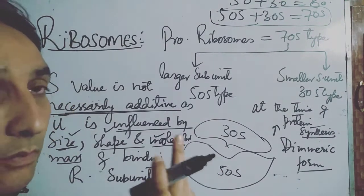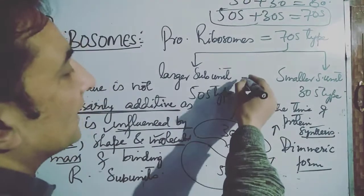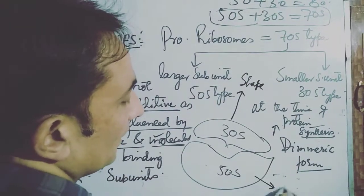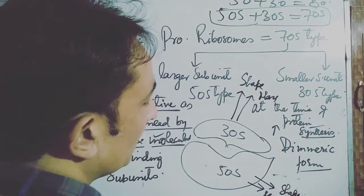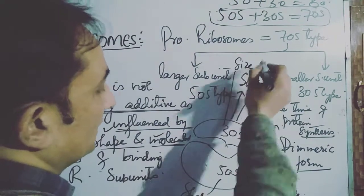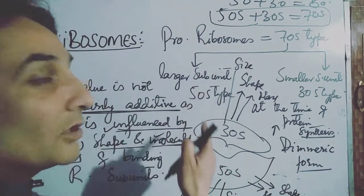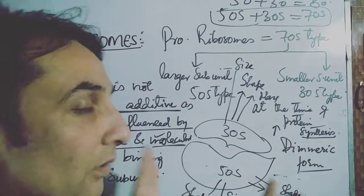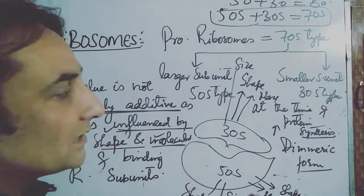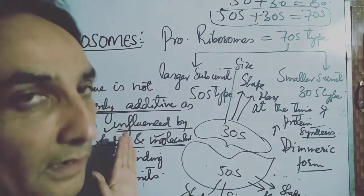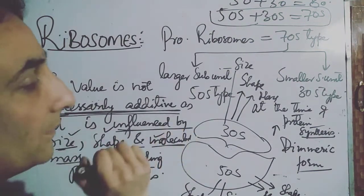When the 30S and 50S subunits are separate, each has its own shape, size, and molecular mass. But when they unite in the dimeric form, the resulting shape, size, and molecular mass are altogether different from either subunit. Because these parameters change, the S value changes too — and so there is no mathematical addition. Therefore, 50S plus 30S equals 70S, not 80S.